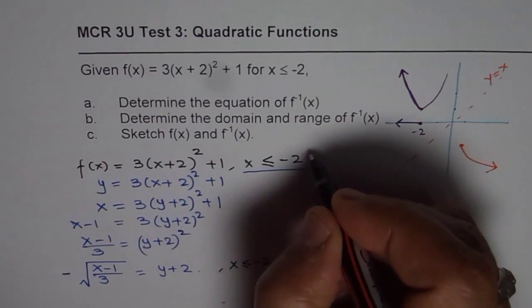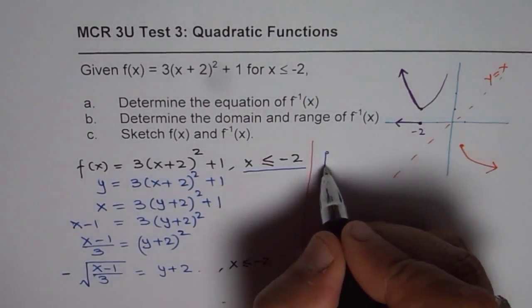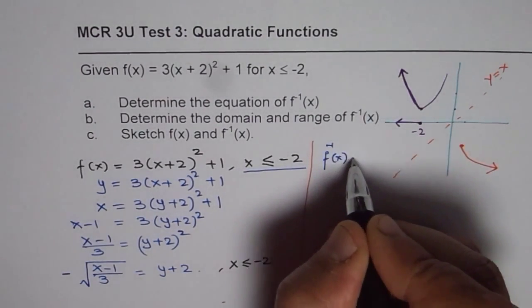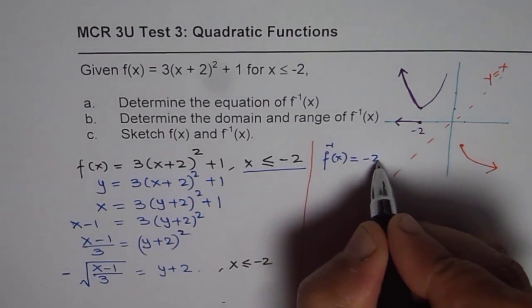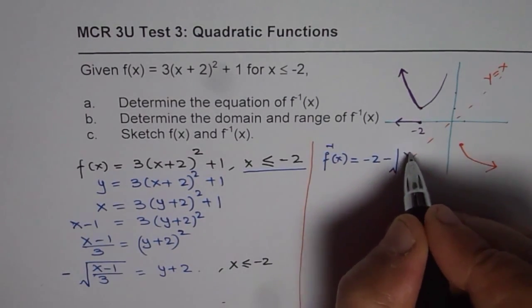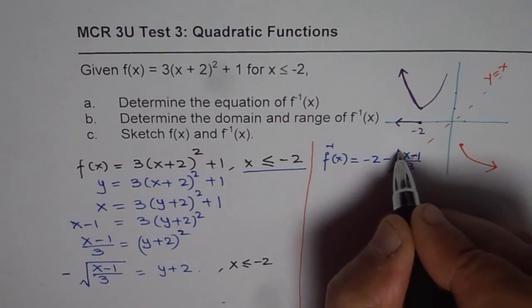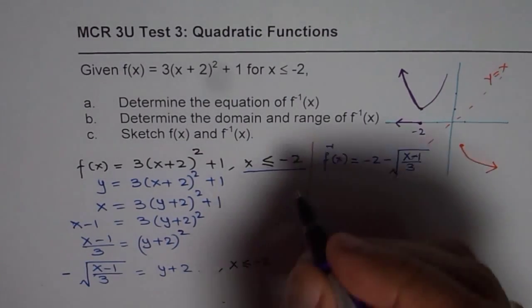Now with that, we get inverse of a function and we can write down the inverse function here. So we have f inverse x = -2 - √[(x - 1)/3]. So that is the inverse function and that is answer to part A.